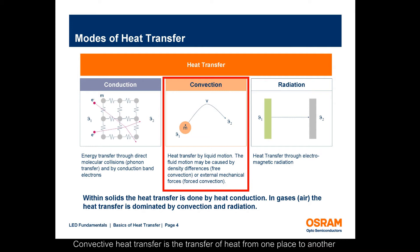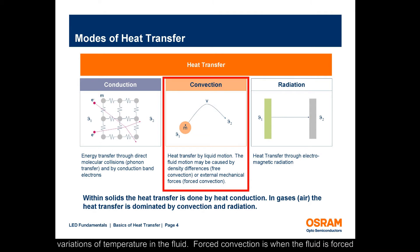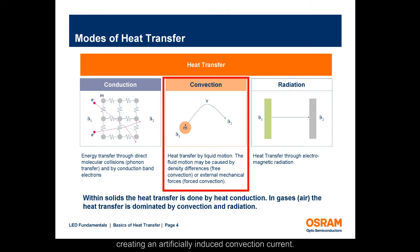Convective heat transfer is the transfer of heat from one place to another by the movement of fluids. Convection is usually the dominant form of heat transfer in liquids and gases. Free or natural convection occurs when the fluid motion is caused by buoyancy forces that result from density variations due to variations of temperature in the fluid. Forced convection is when the fluid is forced to flow over the surface by external sources, such as fans, stirrers, and pumps, creating an artificially induced convection current.